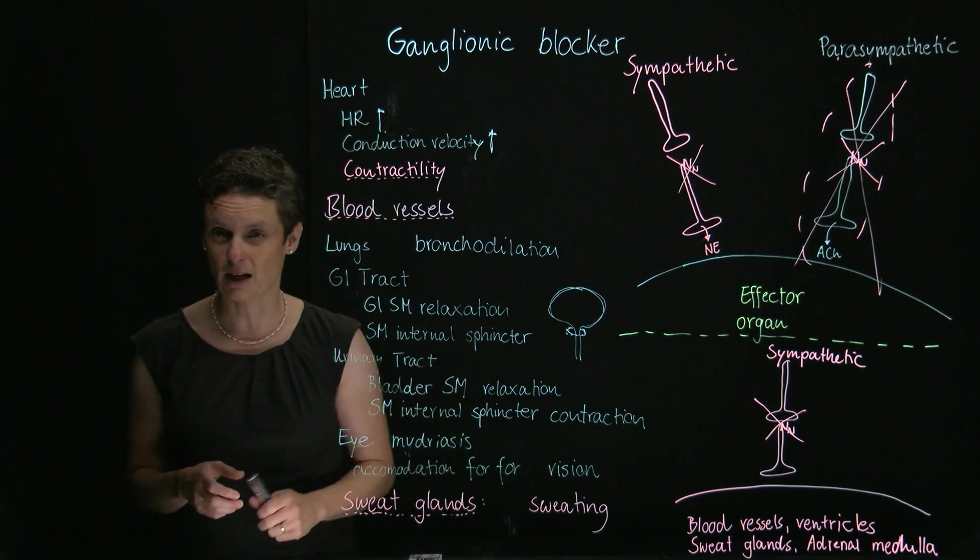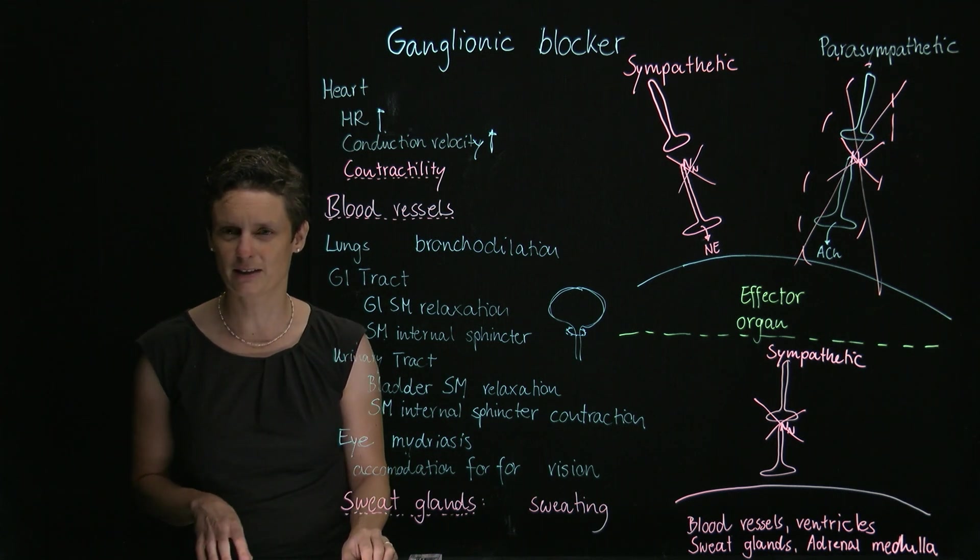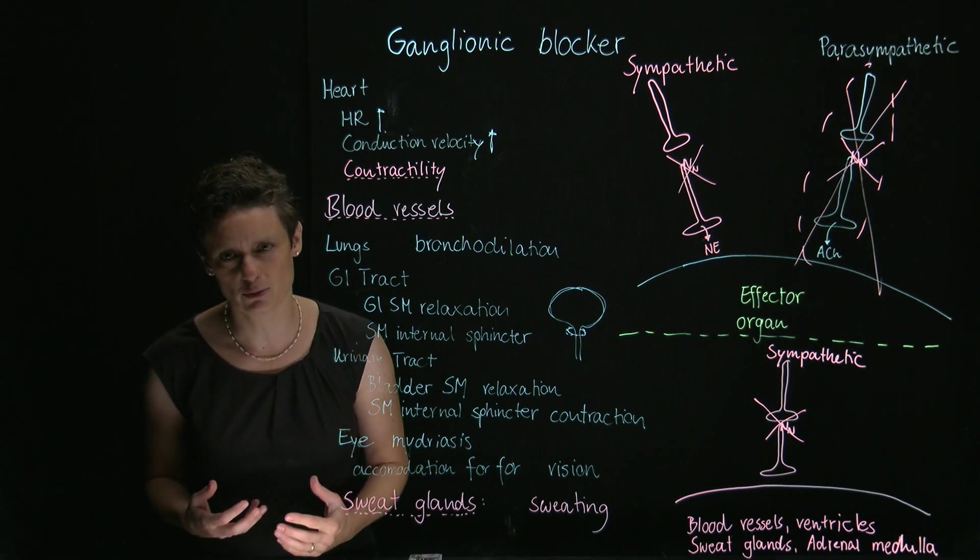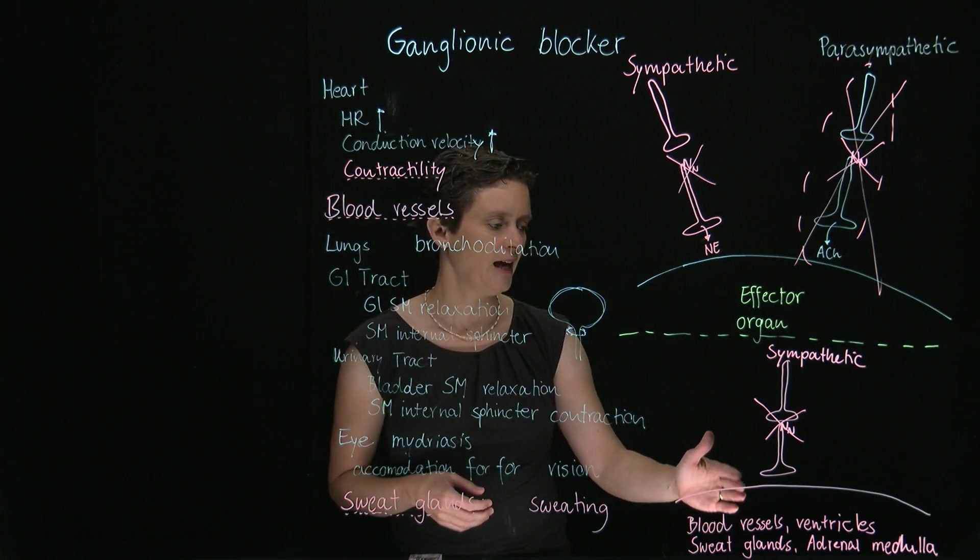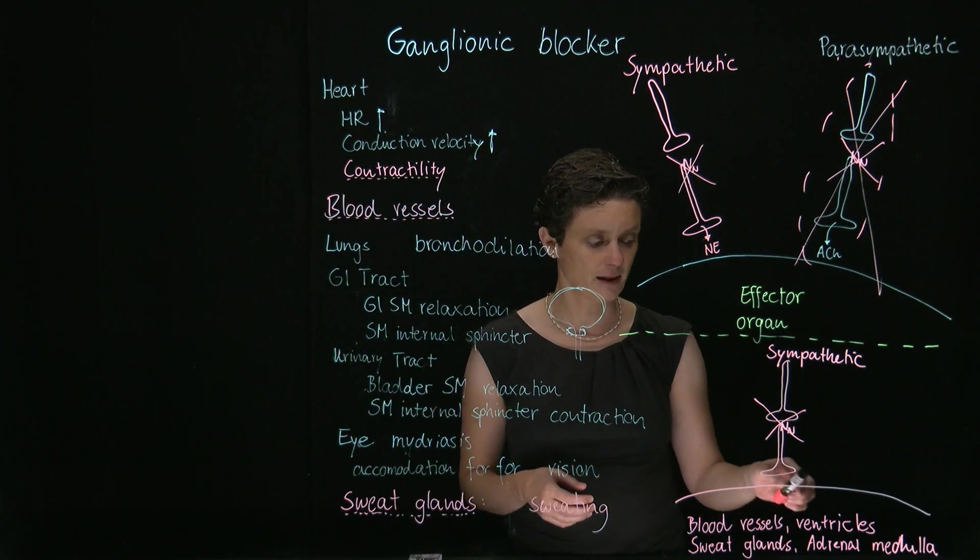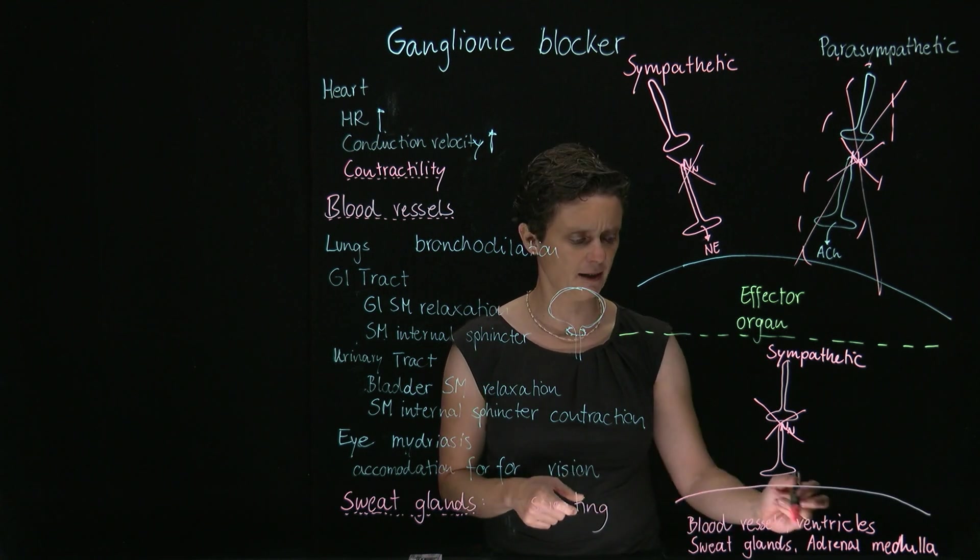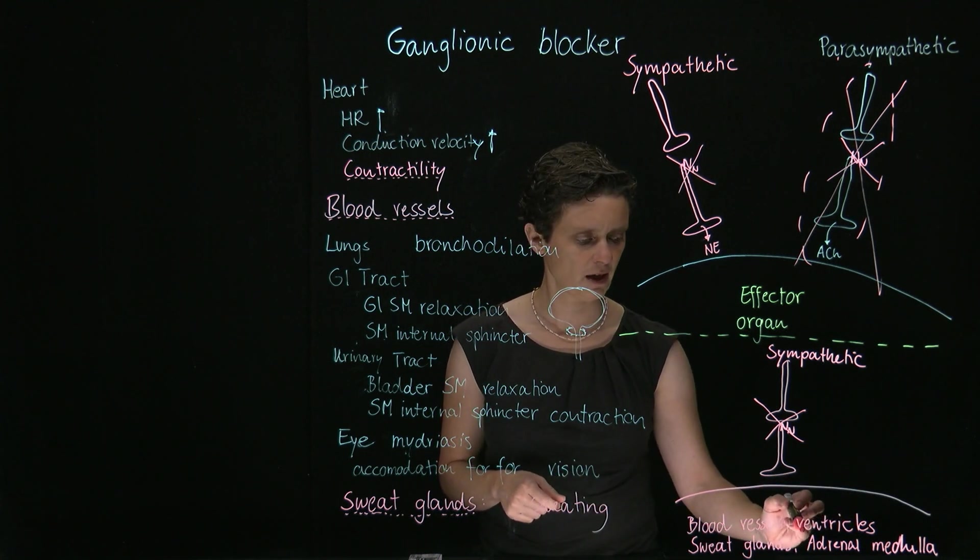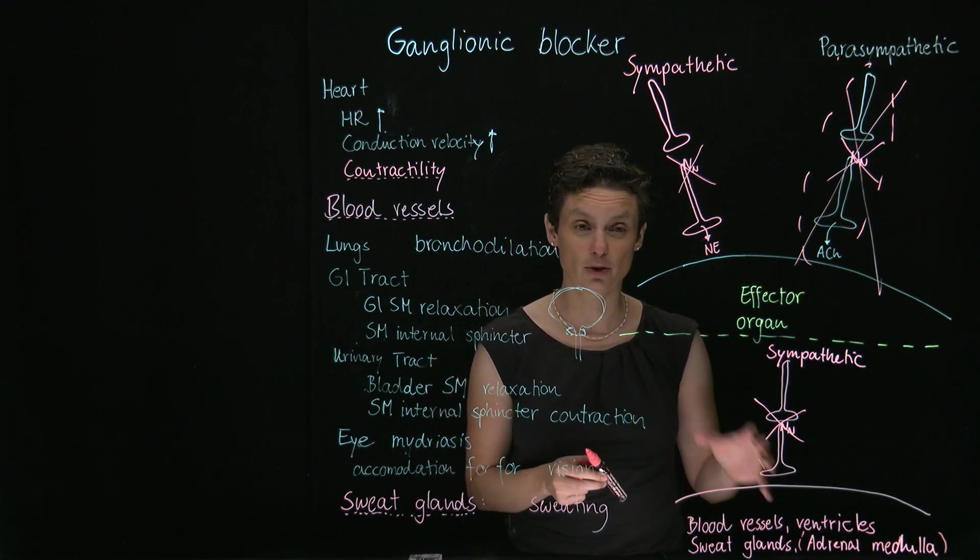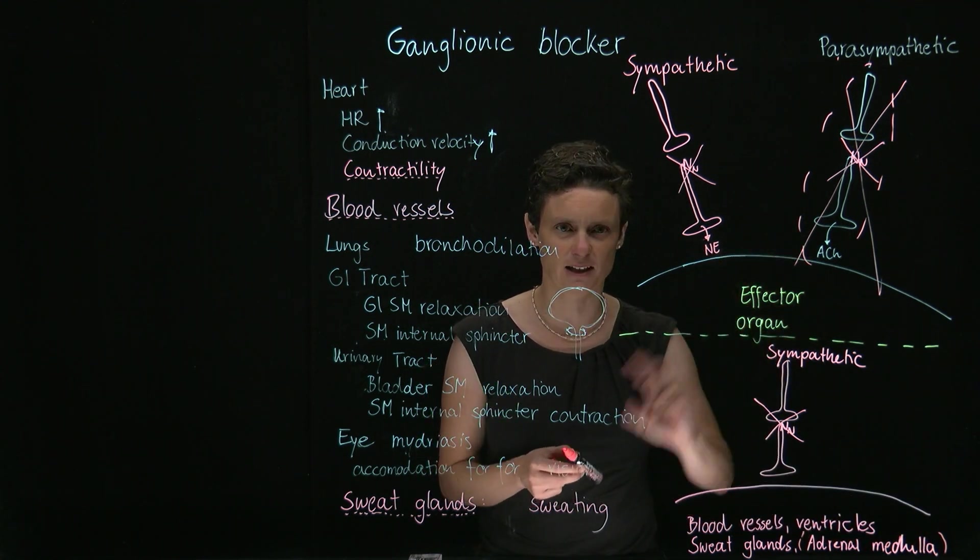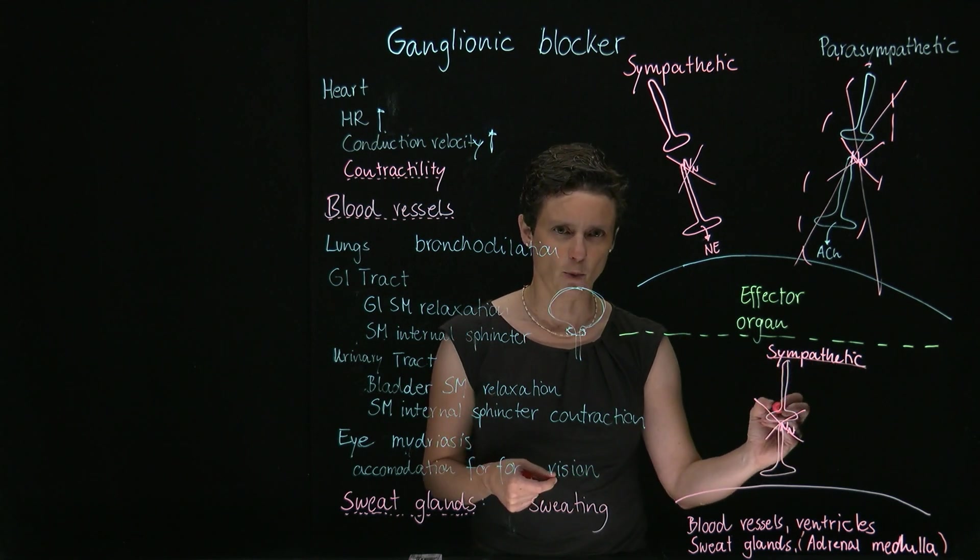I have skipped over a couple of organs, as you probably realized, and these are the organs which are not under dual control, and you have to know them. I have listed them here: the blood vessels, the ventricles of the heart, the sweat glands, and the adrenal medulla, which is not important for our ganglionic blockers effects. These are organ systems which are not under dual control, which are majorly under sympathetic control.